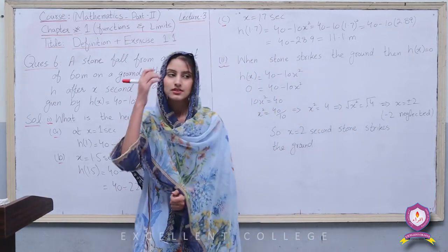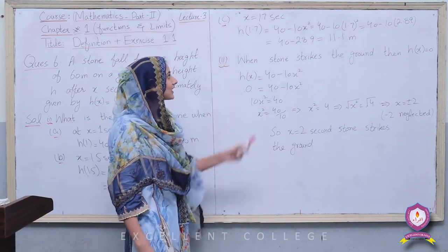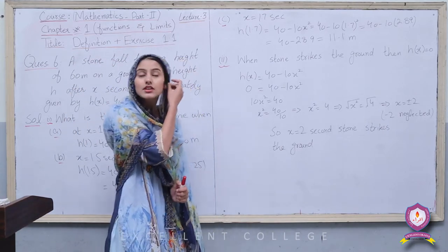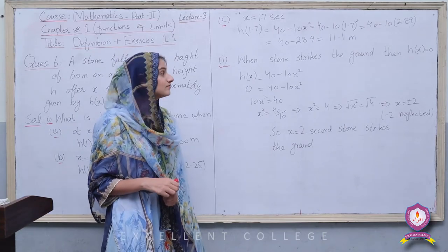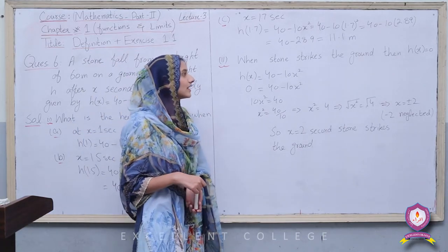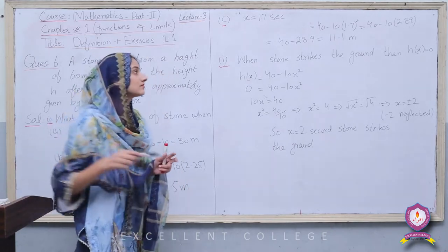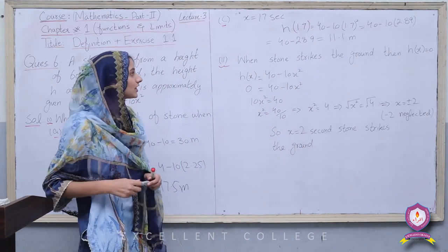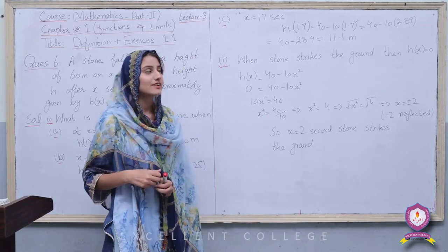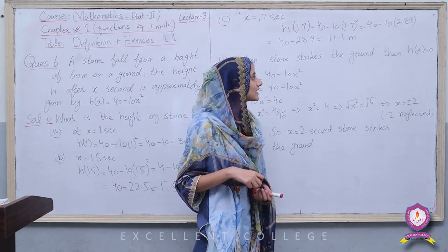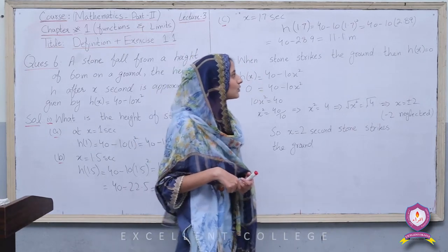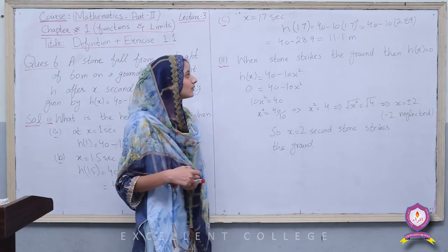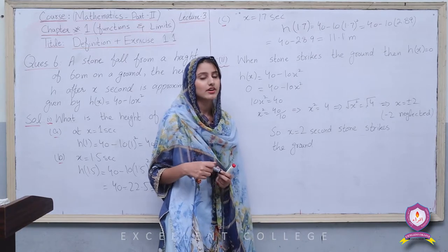Part (c): At x = 1.7 seconds, h(1.7) = 40 - 10(1.7²) = 40 - 10(2.89) = 40 - 28.9 = 11.1 meters.